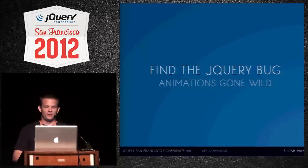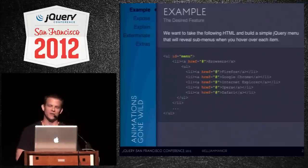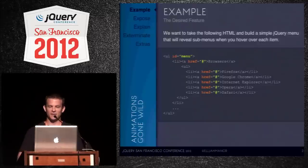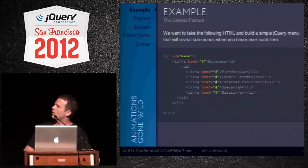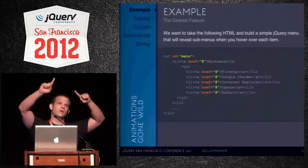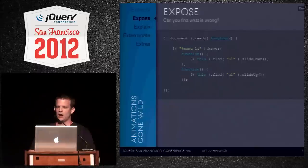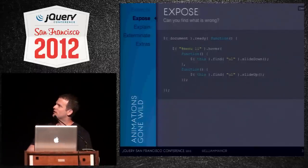I call this one 'animations gone wild.' You might have seen this if you've done anything with animations beyond really simple stuff. It's a common problem that even large websites have. We're going to build a simple little menu — list items with a browser item that reveals Firefox, Chrome, and so on on hover. The code looks really simple, but it can run into some interesting problems.